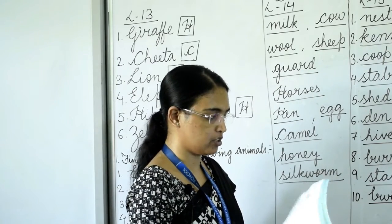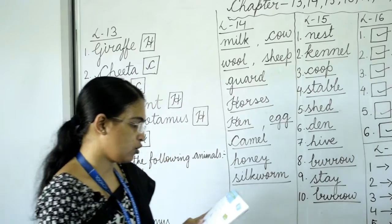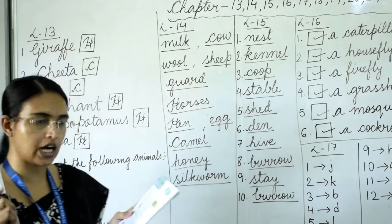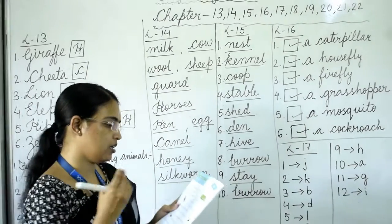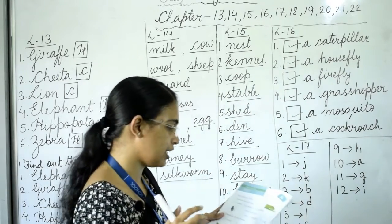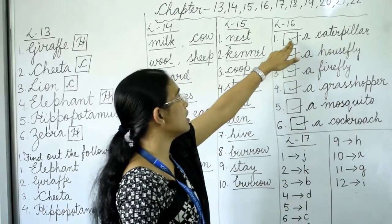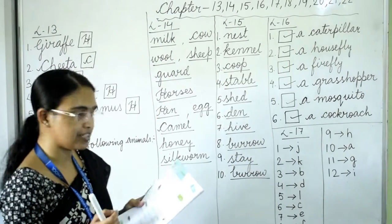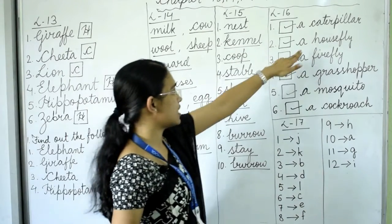Turn the page to learn about insects. Tick the correct name — three options are given. Number one: I have many legs and I crawl. Options are housefly, cockroach, or caterpillar. The answer is caterpillar, so tick caterpillar. Number two: I fly in dirty places. Options are ant, housefly, or bee. The answer is housefly — give a tick mark.